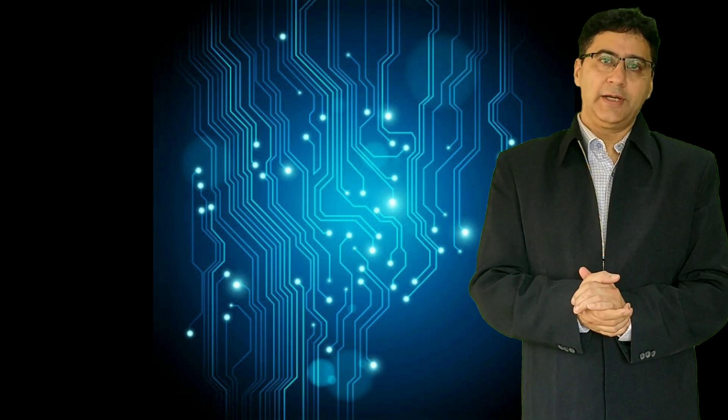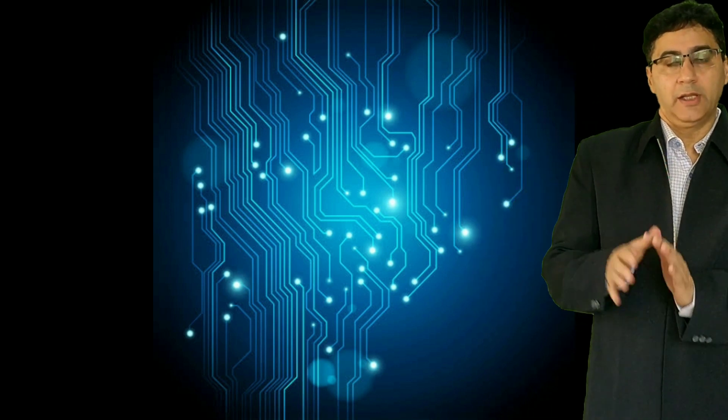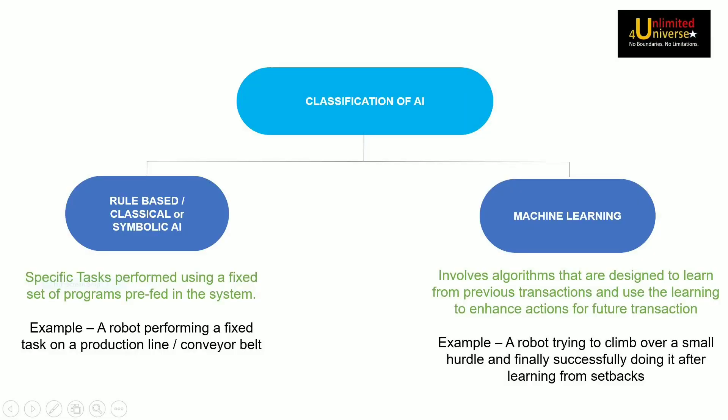If we are to classify artificial intelligence into two broad types then one of it will be rule based AI or we can also call it classical AI or symbolic AI and sometimes people also call it good old fashioned AI. And the second is machine learning which is growing in tremendous prominence in the past few years.